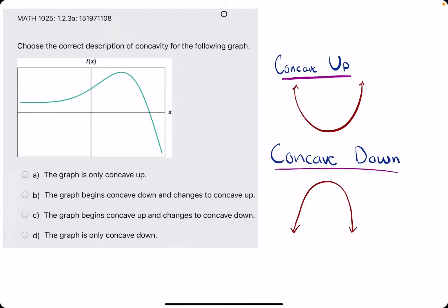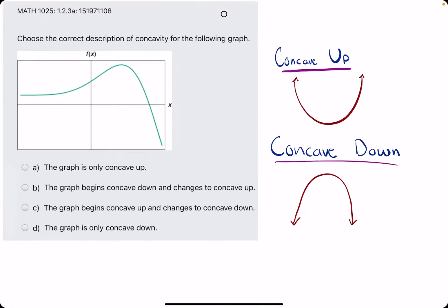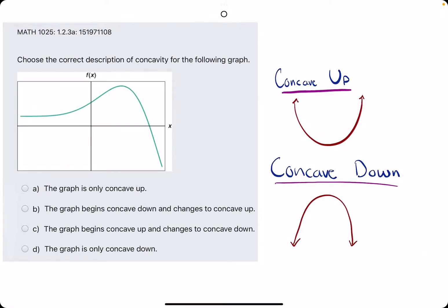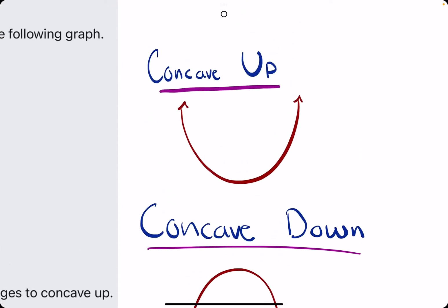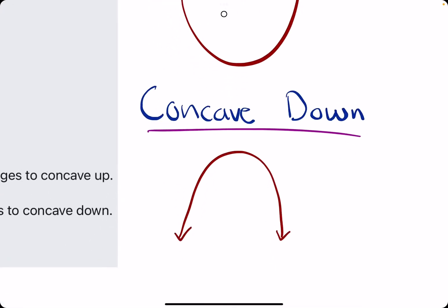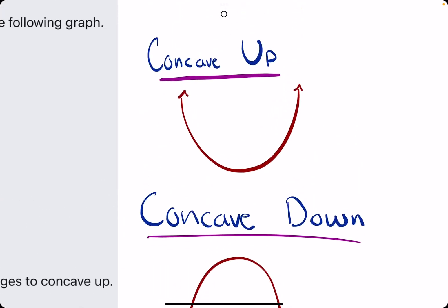In this problem, they give us a function on a graph, and the goal is to identify whether it's concave up or down, or both. The biggest thing is recognizing concave up and concave down.